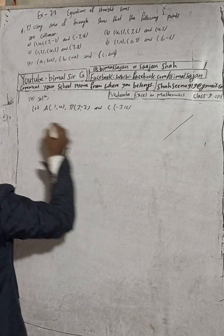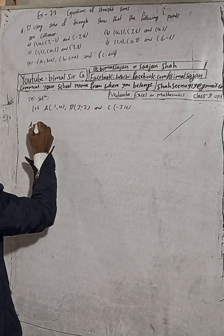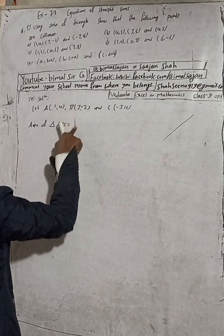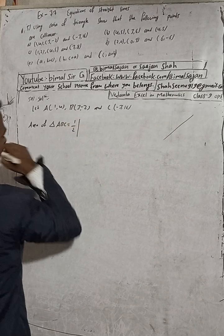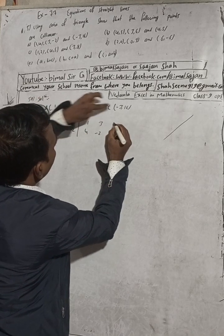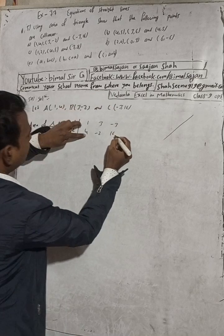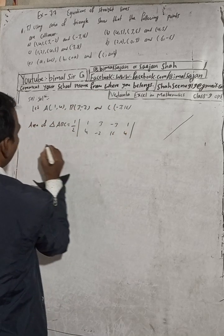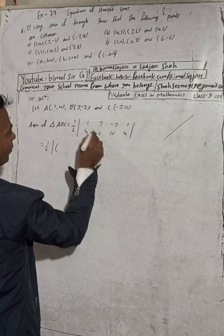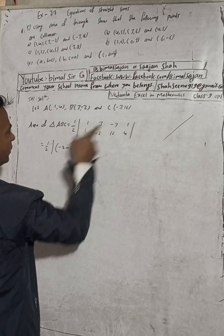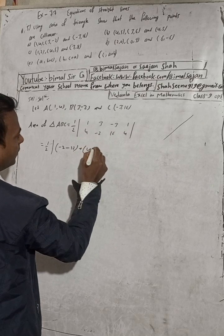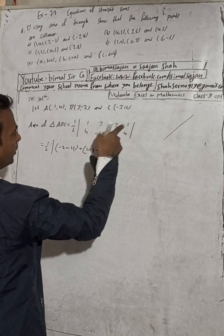To do this, we will find the area of triangle ABC. The formula is 1/2 times the determinant. We write the coordinates: 1,4 then 3,-2 then -3,16, and repeat 1,4. This gives us 1/2 times |1(-2-16) + 3(16-4) + (-3)(4-(-2))|, which simplifies to 1/2 times |minus 2 minus 2| plus 3 or plus 6 in 48 minus, and so on.